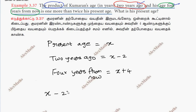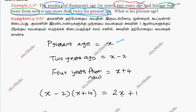x minus 2 into x plus 4 is equal to 1 more than twice his present age. Twice his present age is 2x, and 1 more than that is 2x plus 1. So the equation is: (x-2)(x+4) = 2x + 1.